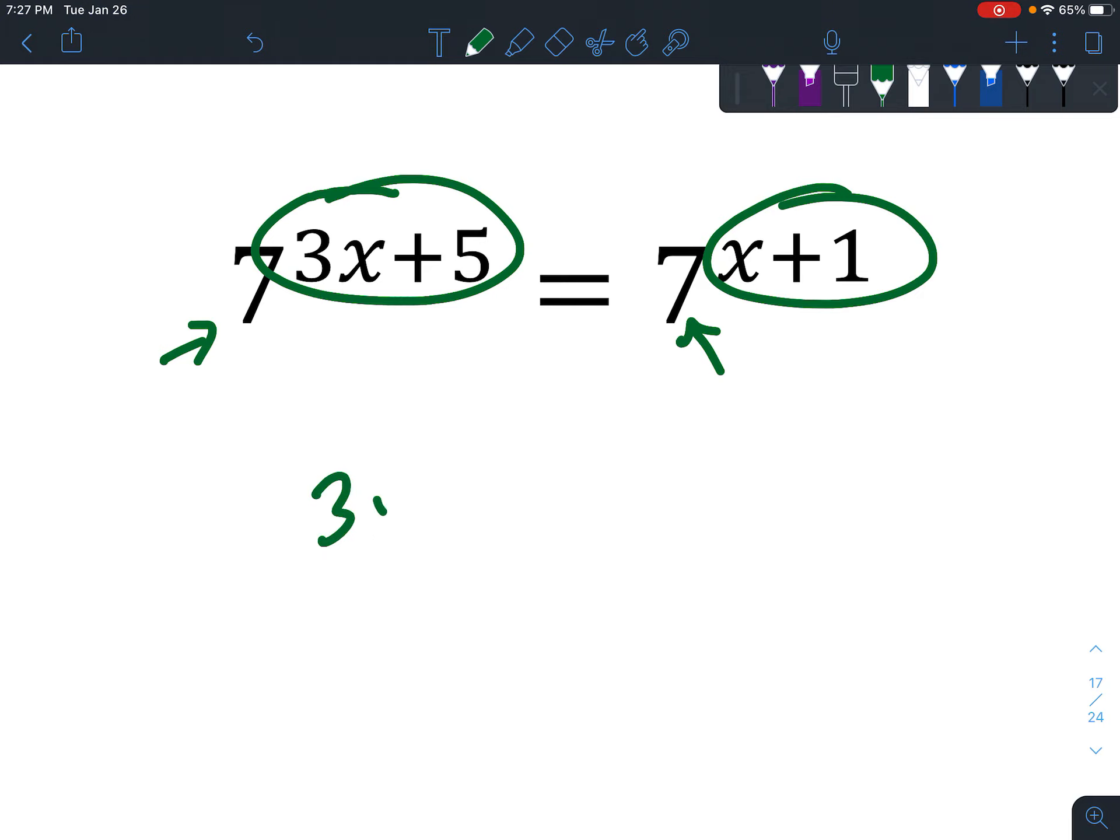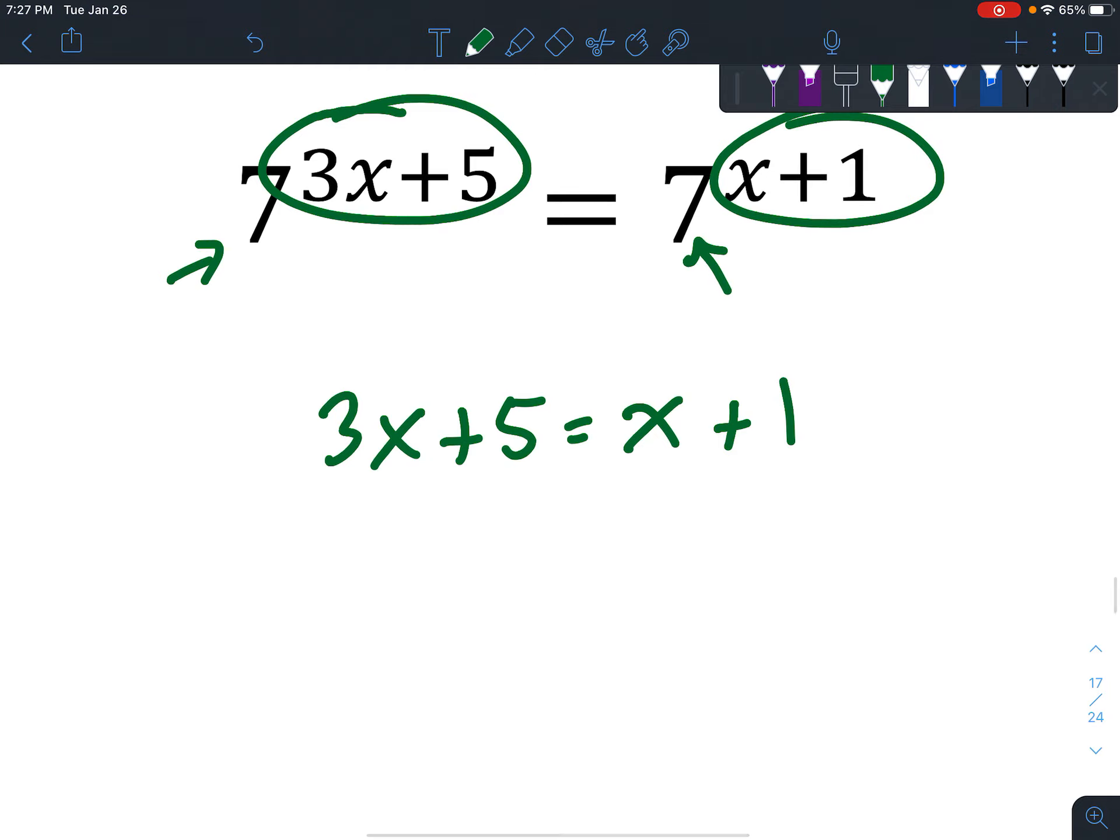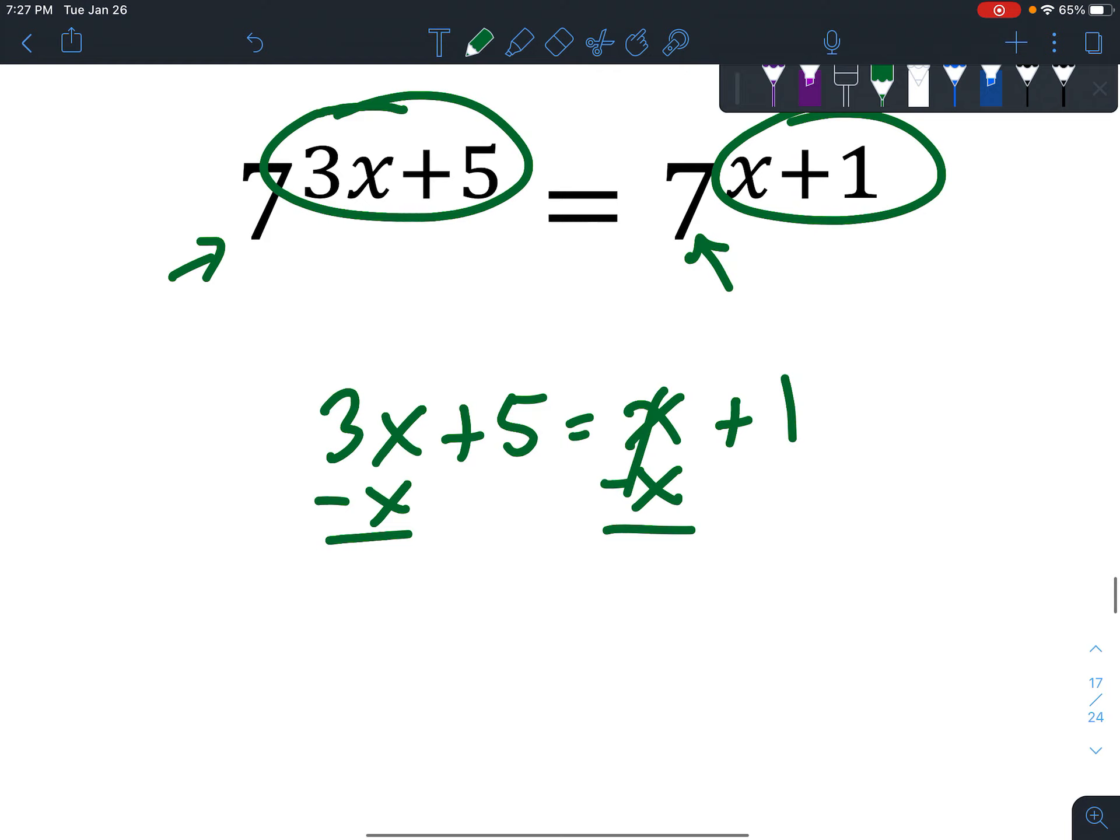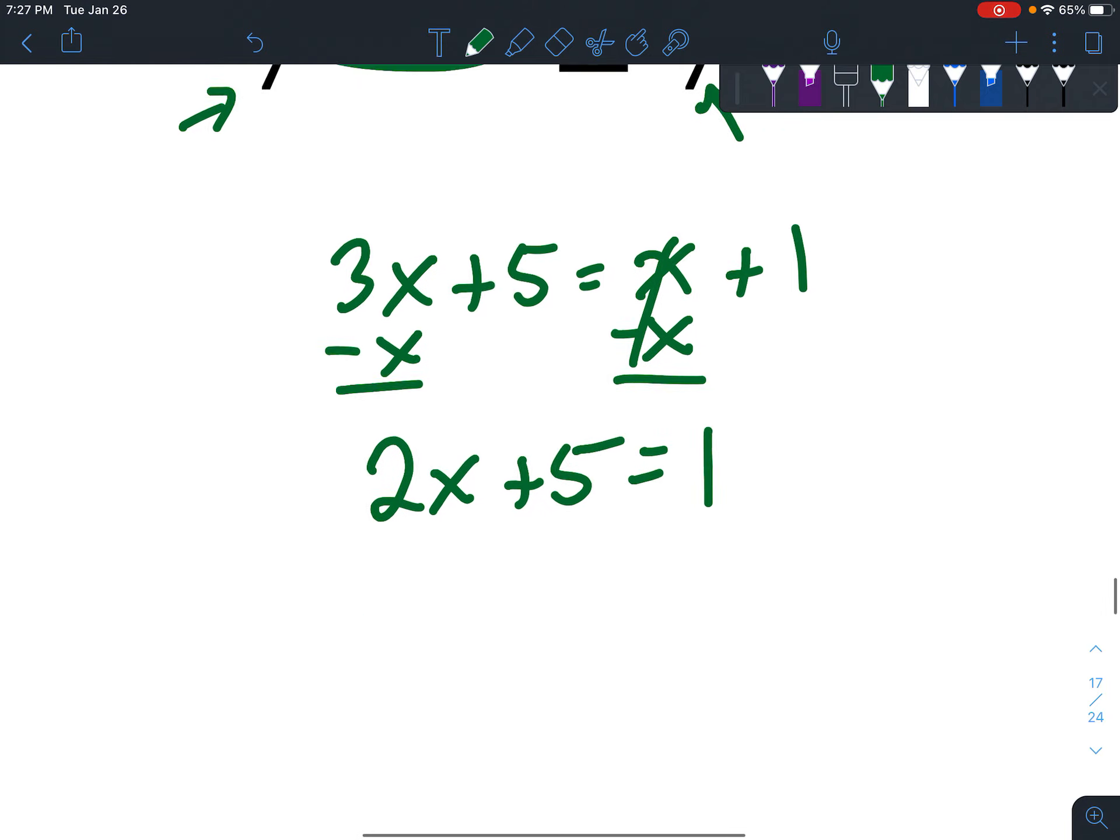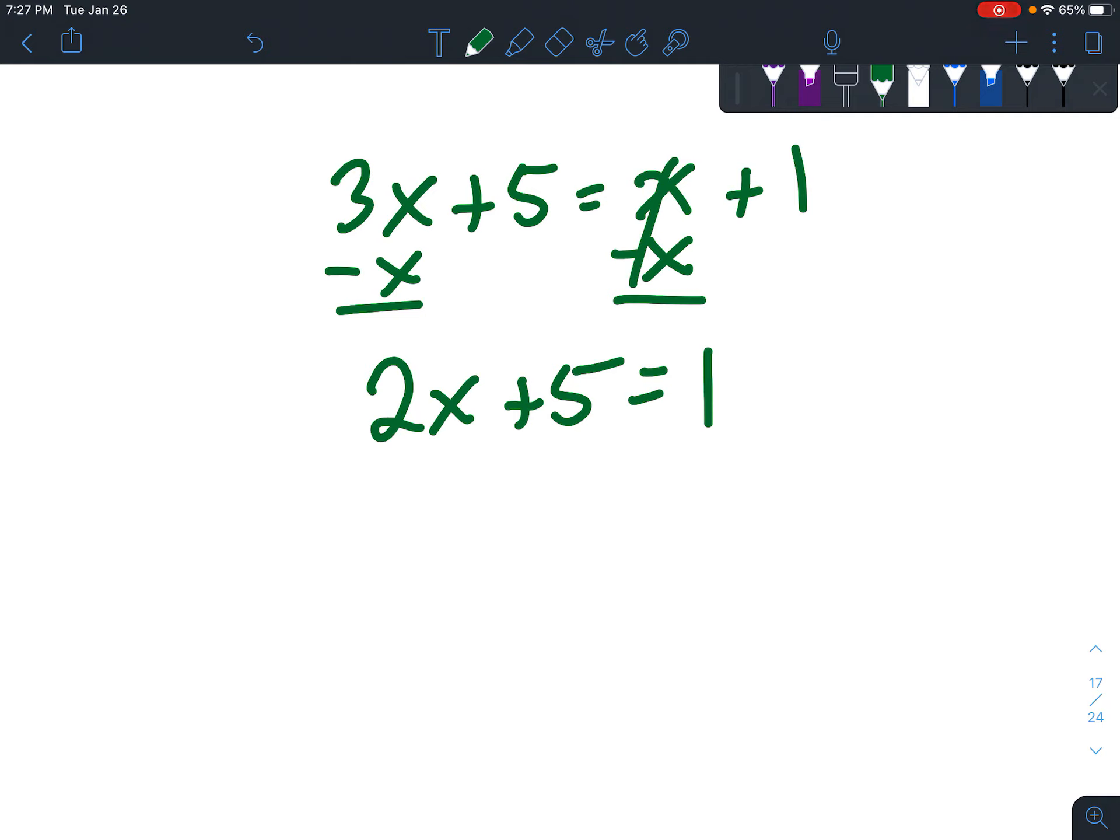It becomes its own little mini problem. Get your variables over to one side, so we get 2x+5 = 1. And now you always want to get rid of the thing that's added or subtracted before you get rid of the thing that's multiplied or divided.